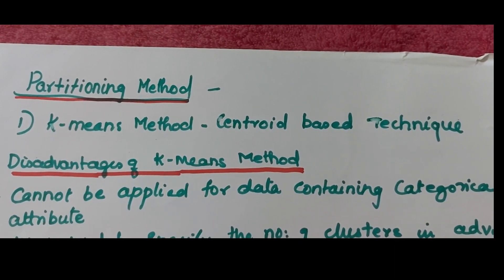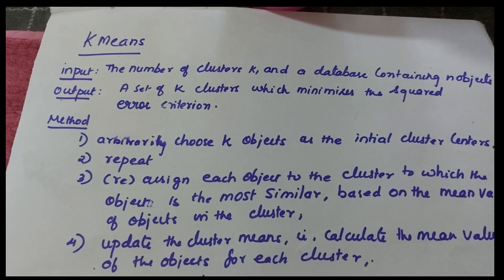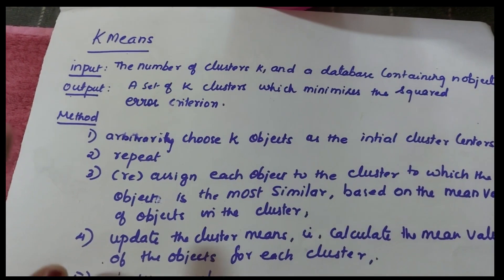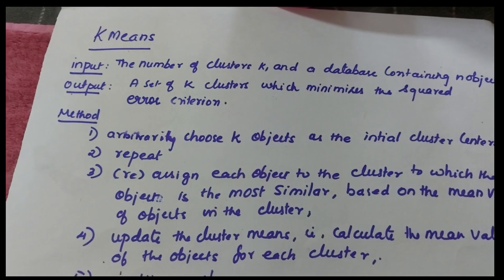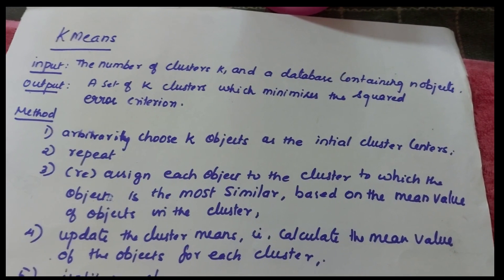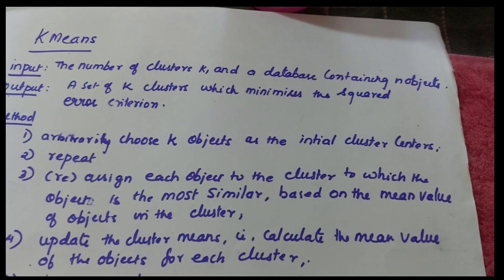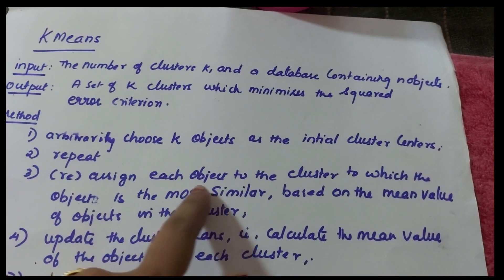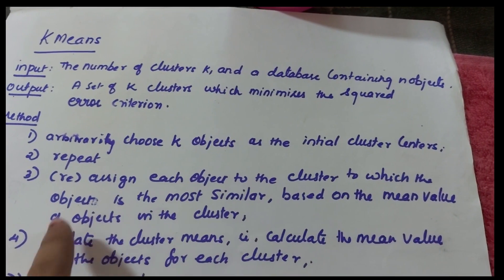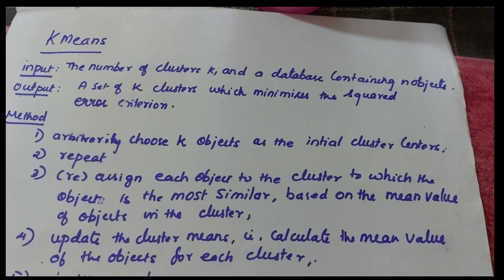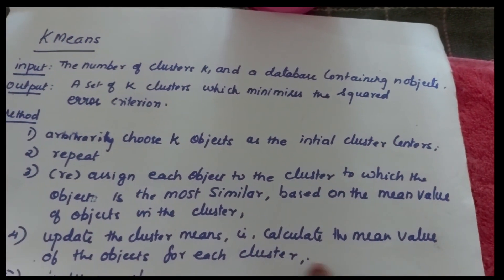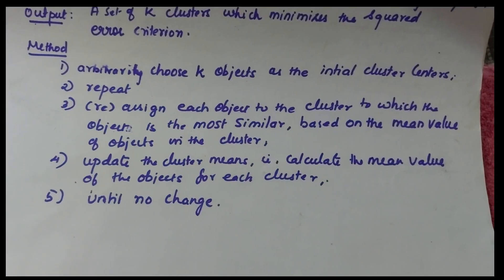The K-Means algorithm takes as input the number of clusters K and a database containing N objects. The output is a set of K clusters which minimizes the squared error criterion. The method is: first, arbitrarily choose K objects as initial cluster centers; then repeat — reassign each object to the cluster to which it is most similar based on the mean value of the objects in the cluster; update the cluster means by calculating the mean value for each cluster.